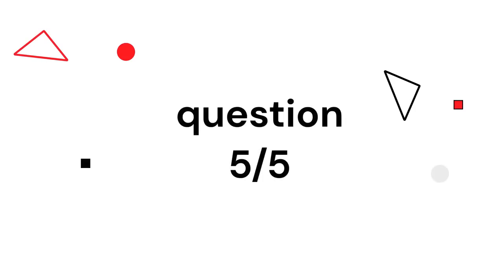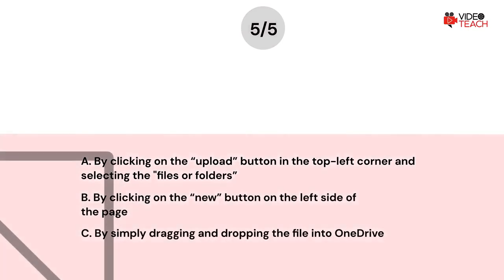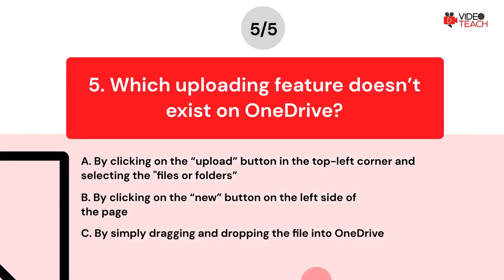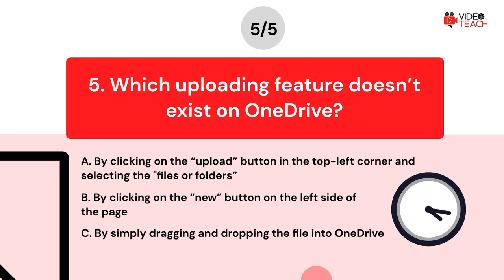Question number five. Which uploading feature doesn't exist on OneDrive? Option A: By clicking on the upload button in the top left corner and selecting the files or folders. Option B: By clicking on the new button on the left side of the page. Option C: By simply dragging and dropping the file into OneDrive. Now you have about 15 seconds to think about your answer.